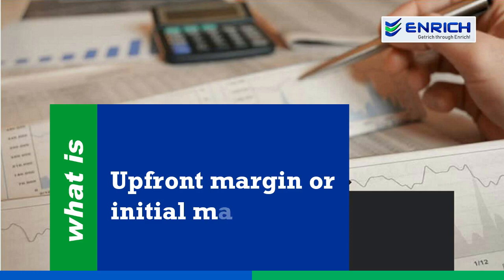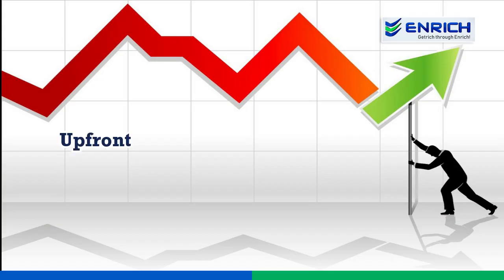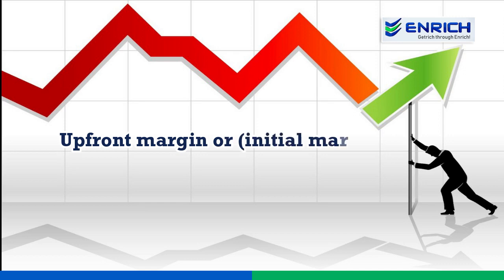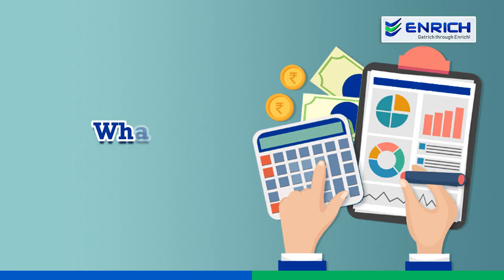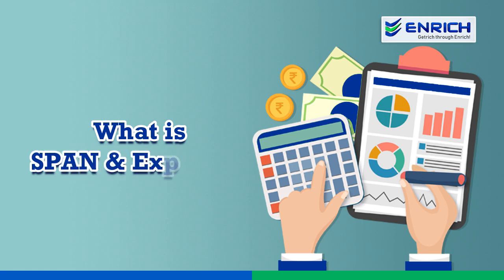So what is upfront margin or initial margin in the F&O segment? As per exchange stipulated norms, upfront margin or initial margin is span margin plus exposure margin, which can be calculated using a margin calculator. In order to understand this better, you need to know what span is and what exposure is.